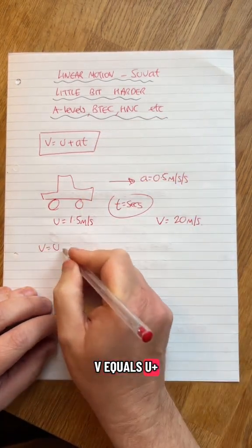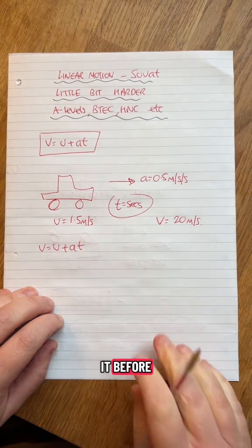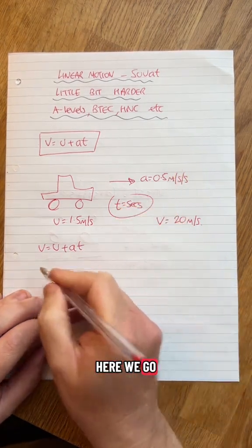V equals U plus AT. Seen it before. I need to rearrange for T. Here we go.